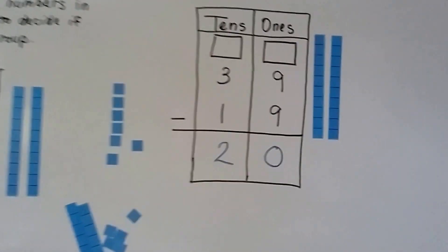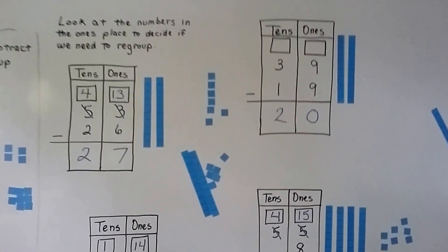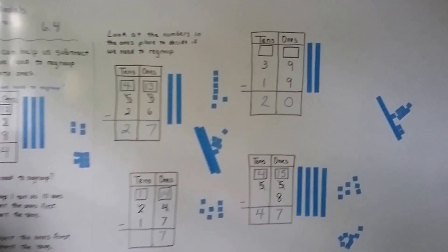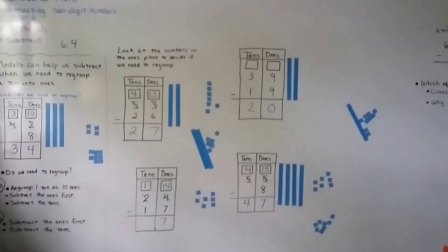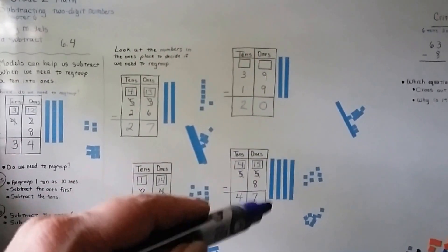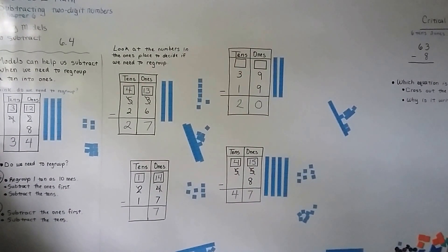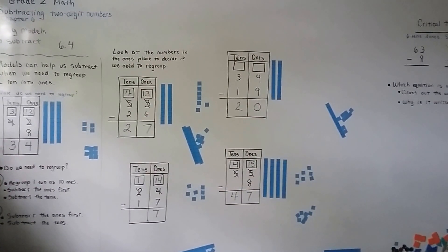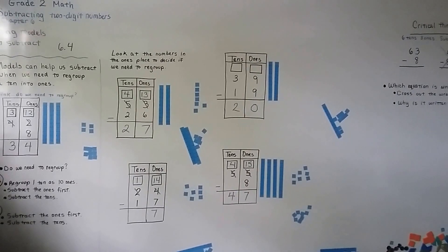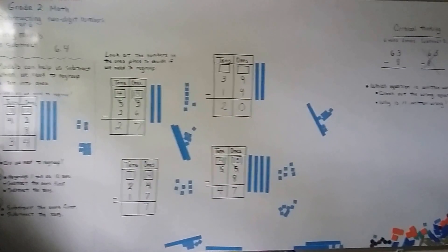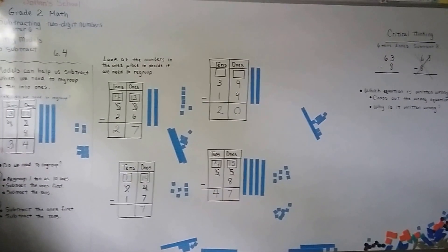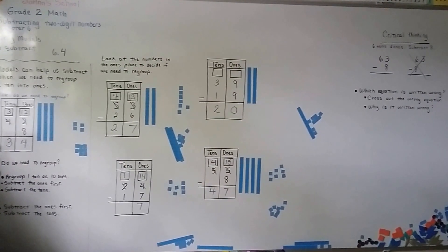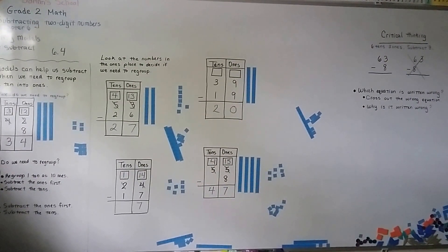So you can use models to subtract. You can make your own models from construction paper — cut out long 10 strips and little 1 unit squares, and you can use them to help you. I'll see you next video. I'm going to continue talking about subtracting and regrouping. Bye!